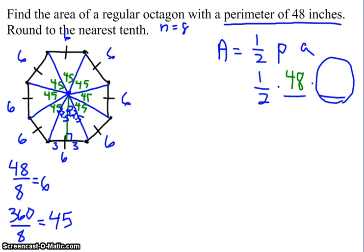So when I draw this little triangle right here, I've got a right angle, got a side length of 3. Let's go ahead and call the apothem X.